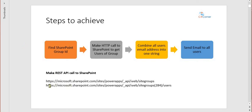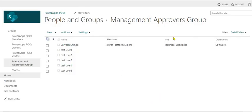Here are the REST endpoints I've noted for reference. The first one is `_api/web/sitegroups` — this is to get the group ID. We are doing this offline and not through Power Automate, but if you need to send an email to many groups you can always call this dynamically. Once you get the group ID, you can call `_api/web/sitegroups/{ID}/users` to get all users in that group.